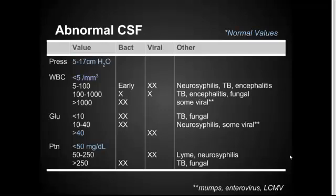Under white blood count: a slightly elevated count between 5 and 100 suggests either early bacterial or viral infection. If it's greatly elevated, such as greater than 1,000, it's much more likely to be bacterial. For glucose, a normal value is greater than 40. Viral infections usually have a normal glucose. If it's below normal, you're thinking bacterial infection or other causes listed in the table. Protein should be less than 50. Moderately elevated protein between 50 and 250 suggests viral infection, and greater than 250 is much more likely bacterial.